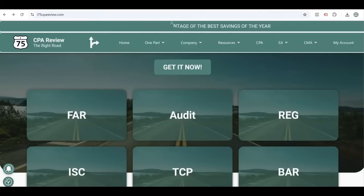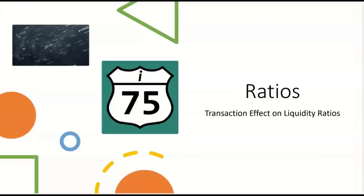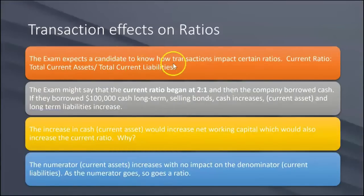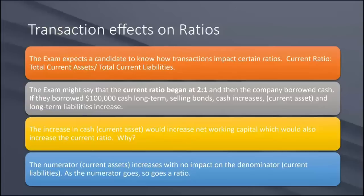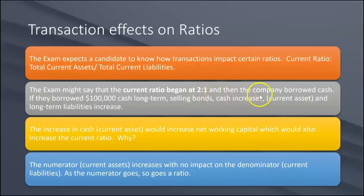Now we're going to look at transaction effects on liquidity ratios, because the exam expects a candidate to know how transactions impact certain ratios — like the current ratio, which is total current assets divided by total current liabilities. The exam might say the current ratio began at two to one, meaning two dollars of current assets for every one dollar of current liability. Then here's the transaction: the company borrowed cash.